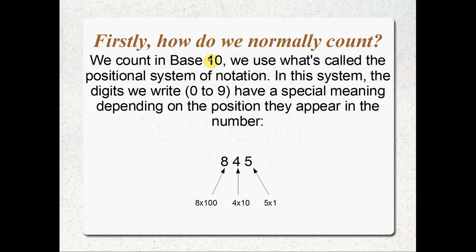We count in base 10. We use what's called the positional system of notation, and that's as opposed to using something like Roman numerals or a tally system. We don't just put down five marks to mean the number five, or a thousand marks if we want to mean the number one thousand. We've got a much, much better way of writing them — it's called the positional system.